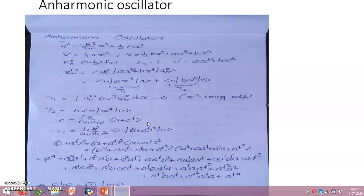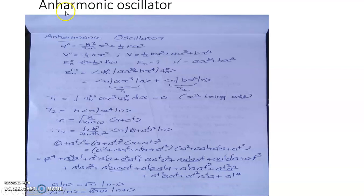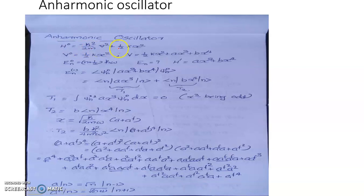Now we will consider another application of time-independent perturbation theory — the case of an anharmonic oscillator. A harmonic oscillator is any system subjected to a potential V equal to half k x squared. The Hamiltonian representing such a harmonic oscillator is p squared by 2m, that is minus h-bar squared by 2m del squared, plus half k x squared.